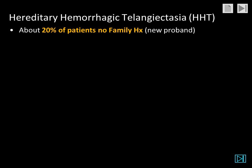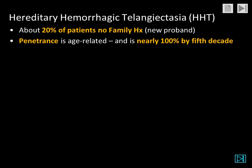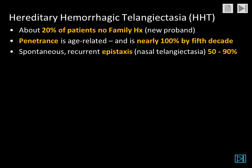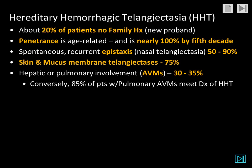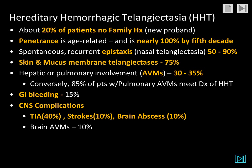About 20% of patients with HHT have no family history and represent a new mutation or proband. The penetrance is age-related and is nearly 100% by the fifth decade. The vast majority of patients present with epistaxis from nasal telangiectasias, and they may have skin and mucous membrane telangiectasias. Pulmonary AVMs occur in about one-third of patients. Conversely, about 85% of patients with pulmonary AVMs will meet the Curaçao criteria for HHT. GI bleeding occurs in about one in seven patients.